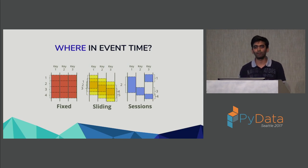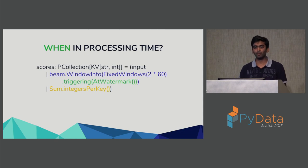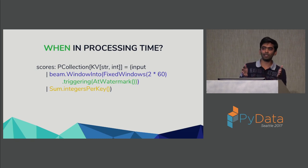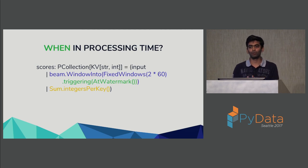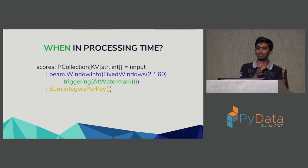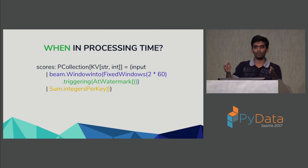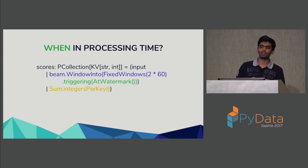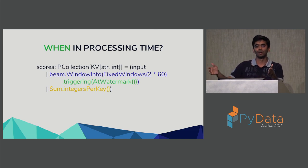For processing time, Beam has a notion of something called a watermark. A watermark is our best estimate of up to what point in the past we have collected all the data for. For example, if it's 4 o'clock and we know everything that happened from 2 to 3 should have reached our system, our watermark is at or past 3. At this point it's safe to calculate results for the 2-to-3 window, but not for the 3-to-4 window since some data may still be in buffers or in the network.